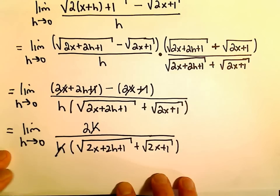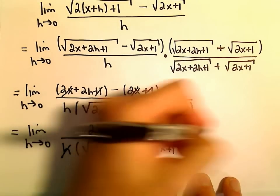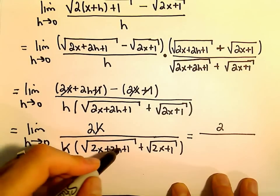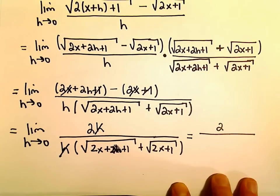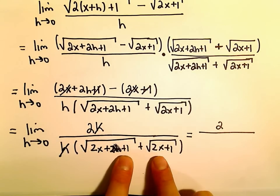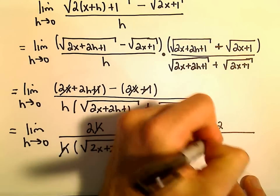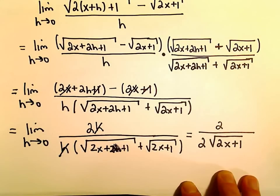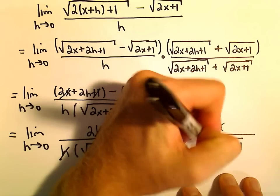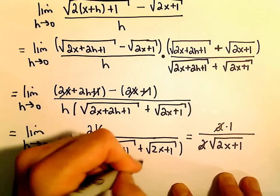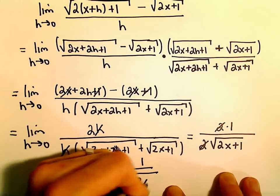The last thing to do to get the derivative is plug in h equals 0. We'll be left with 2 on top. If we plug 0 in for h, our 2h term just goes away — we get 2 times 0. So we'll be left with the square root of 2x plus 1 plus the square root of 2x plus 1, which means we have 2 of those — 2 times the square root of 2x plus 1. We can cancel out the 2s, so our derivative is just 1 over the square root of 2x plus 1.